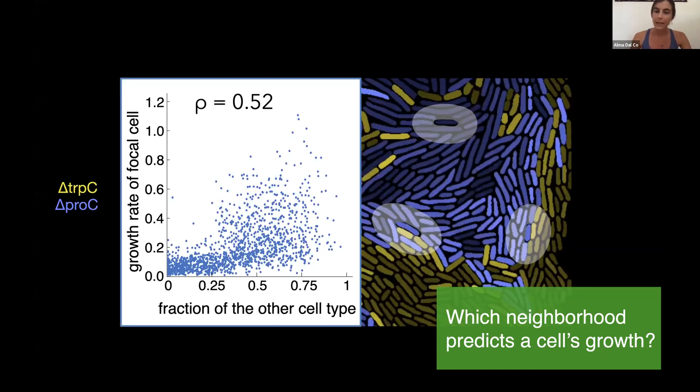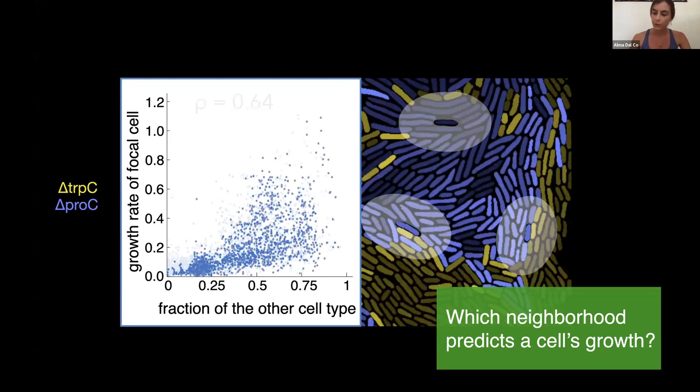Now the question is, did we analyze the right neighborhood? So we can repeat this analysis with a larger neighborhood and we will obtain a new scatter plot with a new correlation score, which is higher in this case.